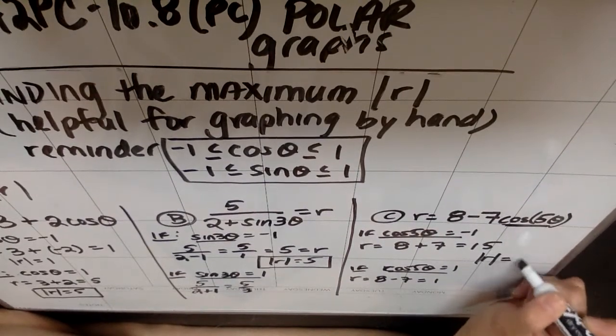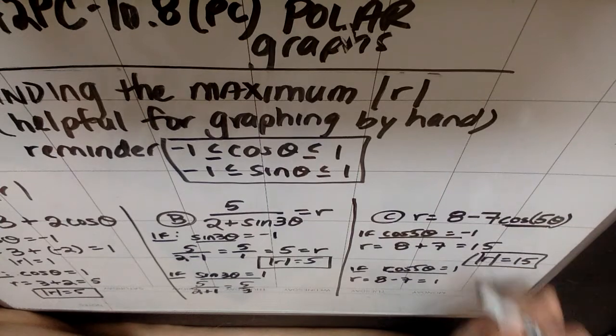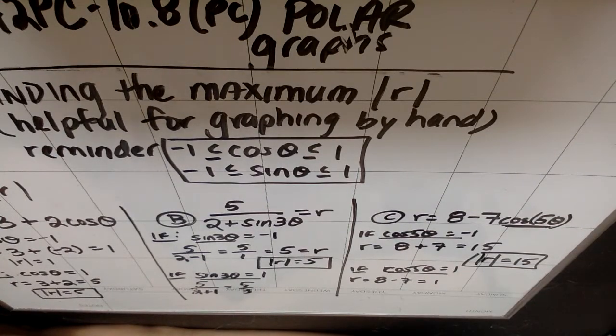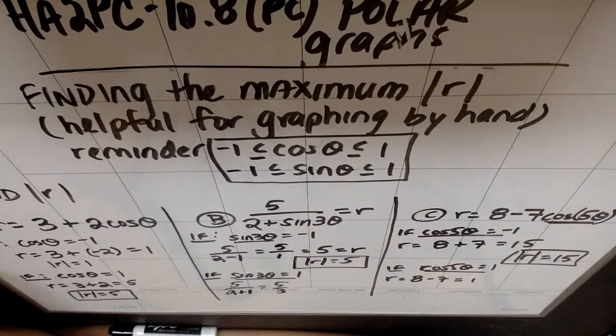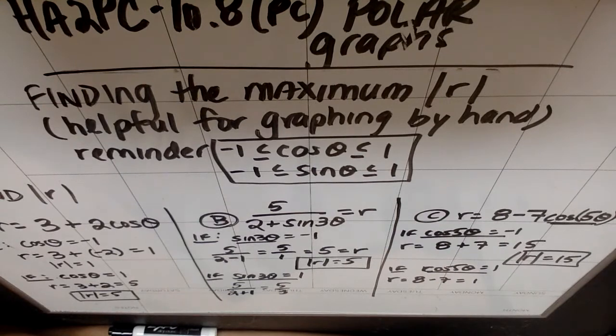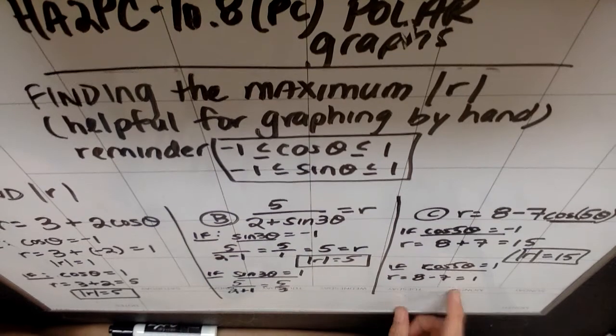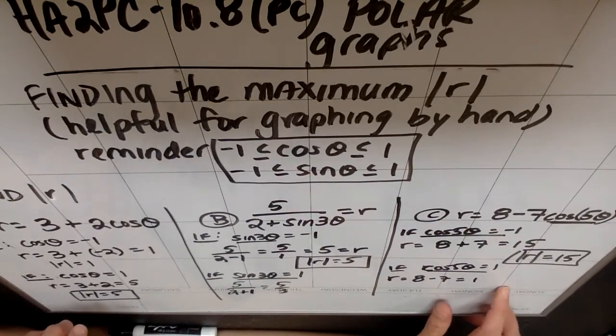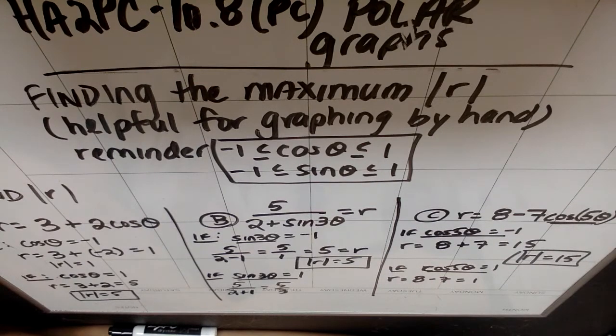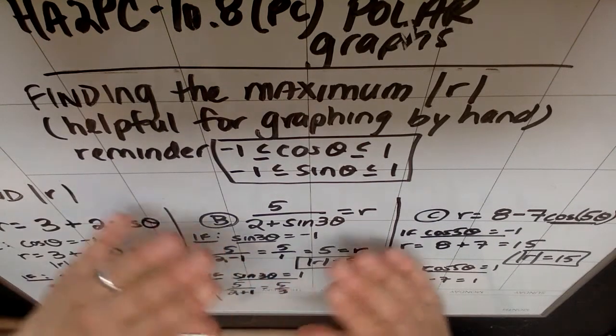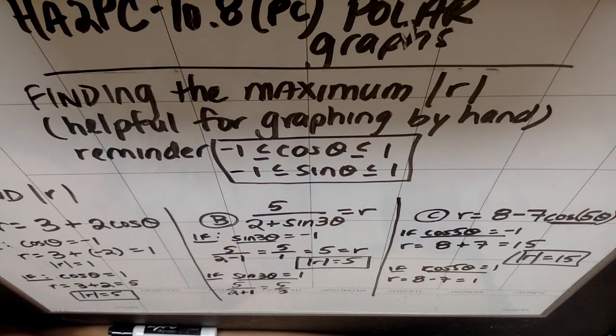So why this is useful for sketching curves by hand is because it gives you an idea of how many circles you need. Because remember, a polar graph is concentric circles. So if I were graphing either of the first two, I would need to make sure my graph had at least 5 concentric circles so that I could make sure I had enough room to graph. If I were making the horrible mistake of graphing C by hand, I would have to have 15 concentric circles so that I could make sure that as I go outward, I have enough circles to plot my points.